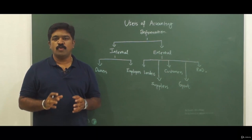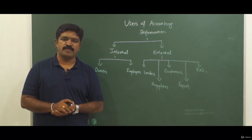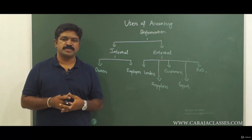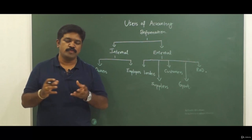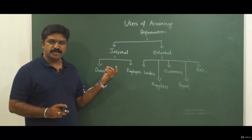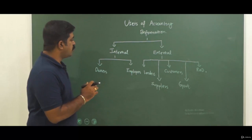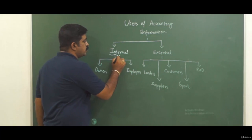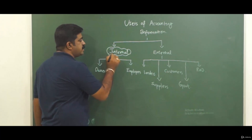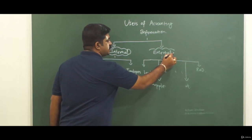In this session let us understand who are the users of accounting information. Obviously in the previous session I have mentioned for whom it is prepared. I have just divided that into two categories. The users of accounting information can be divided into two categories: internal users and external users.